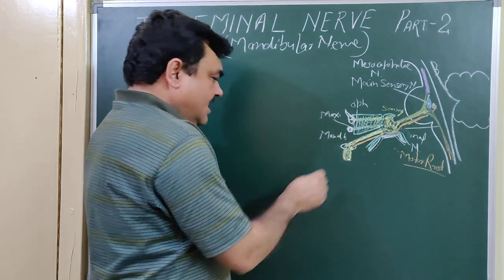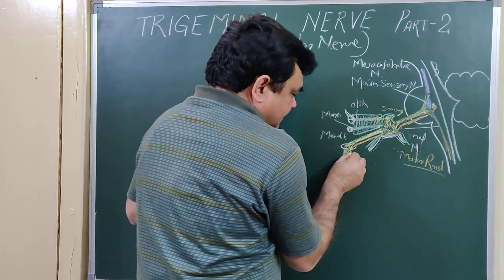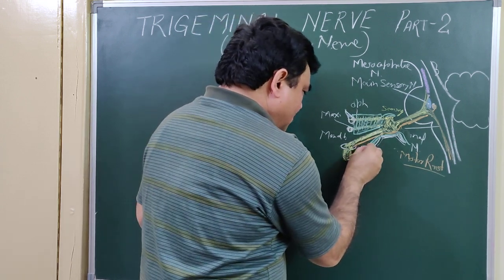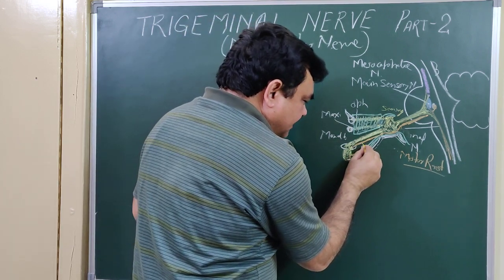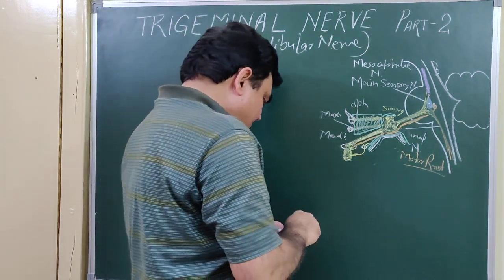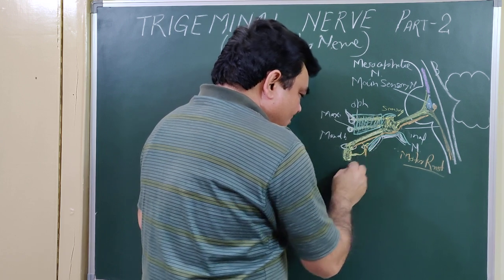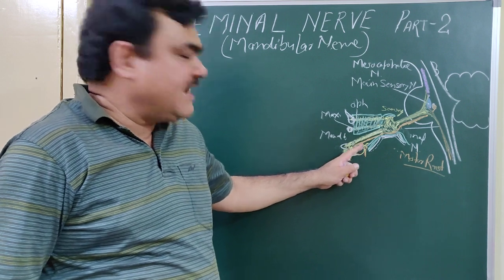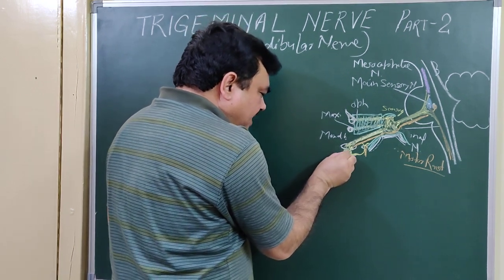The roots join to form a trunk, and this trunk gives two branches. One branch passes backward through foramen spinosum — this is known as the nervous spinosus or meningeal branch. It passes through foramen spinosum into the cranial cavity and gives supply to the middle cranial fossa, passing along with the middle meningeal artery.